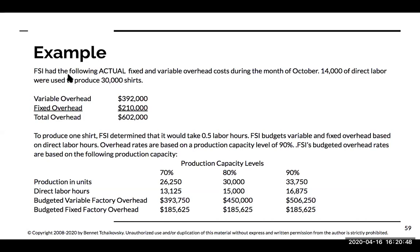FSI had the following actual and fixed variable overhead costs during October. 14,000 hours of direct labor were used to produce 30,000 shirts, and FSI spent $210,000 on fixed overhead. To produce one shirt, FSI determined it would take 0.5 labor hours. FSI budgets variable and fixed overhead based on direct labor hours.